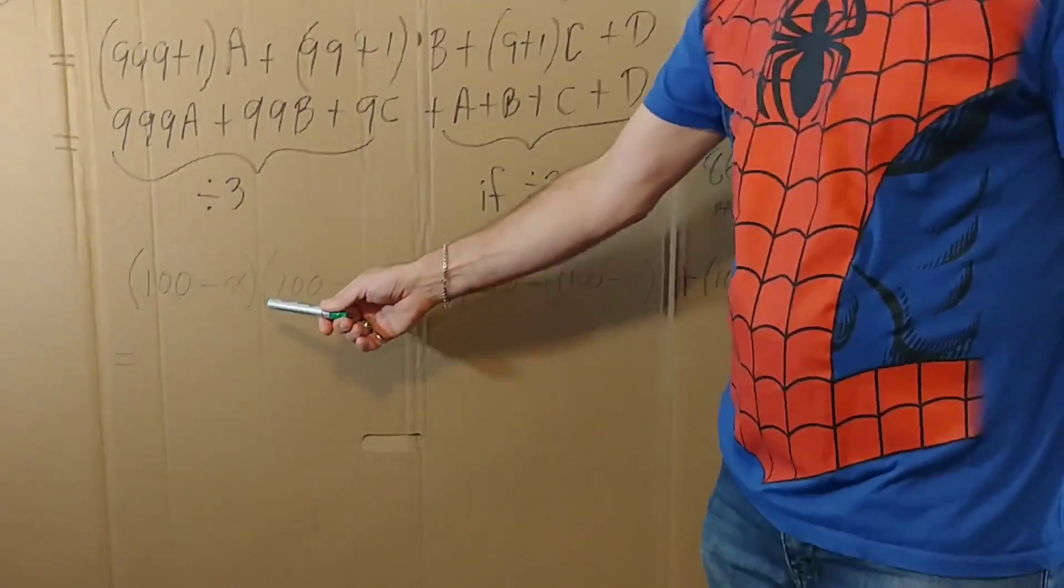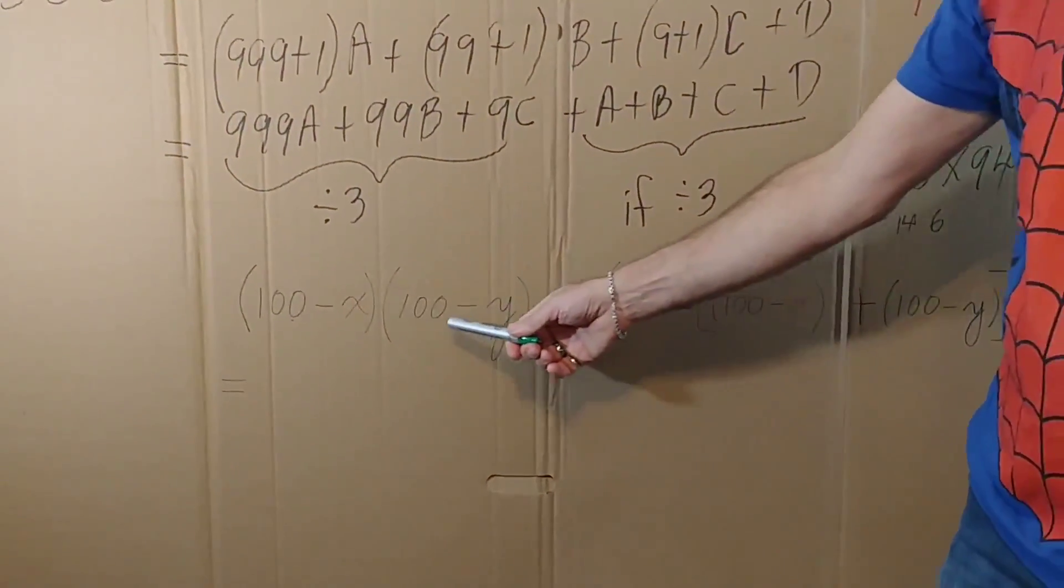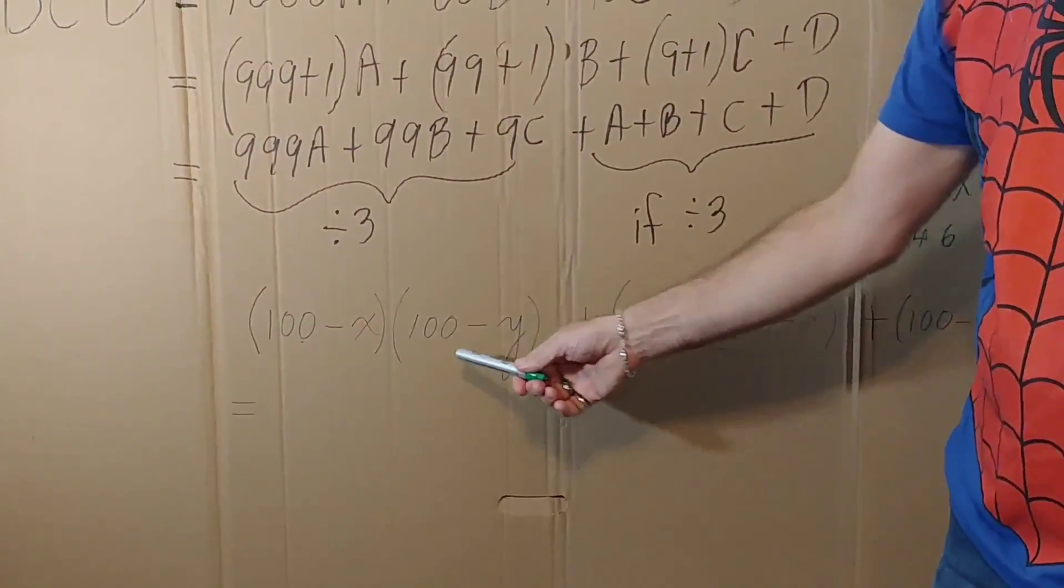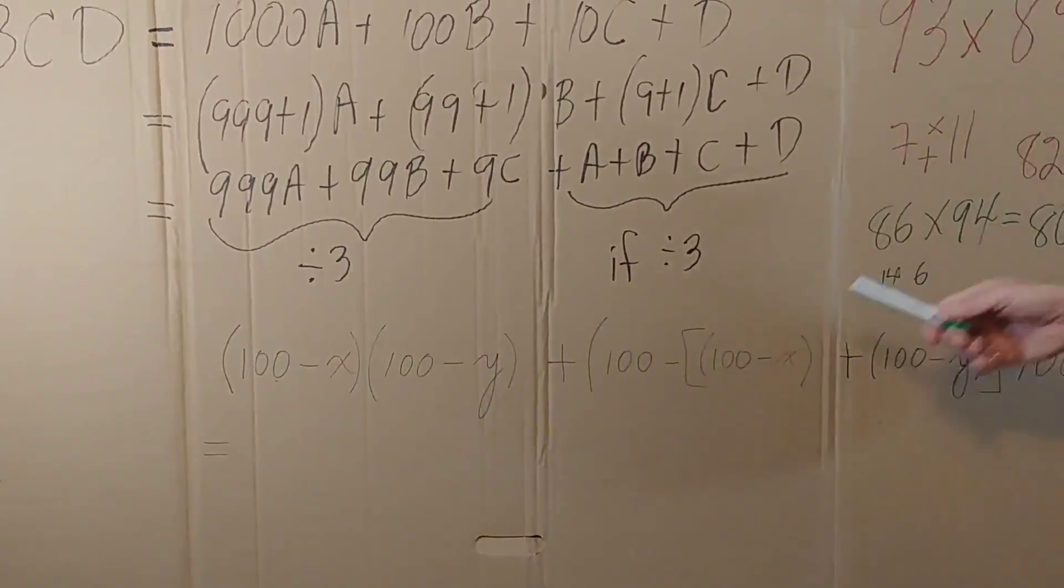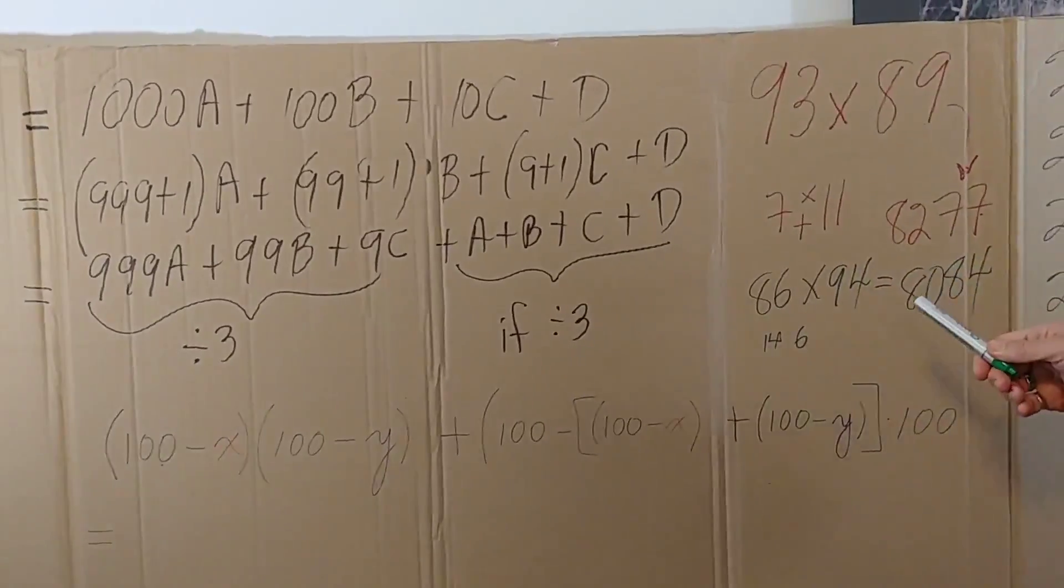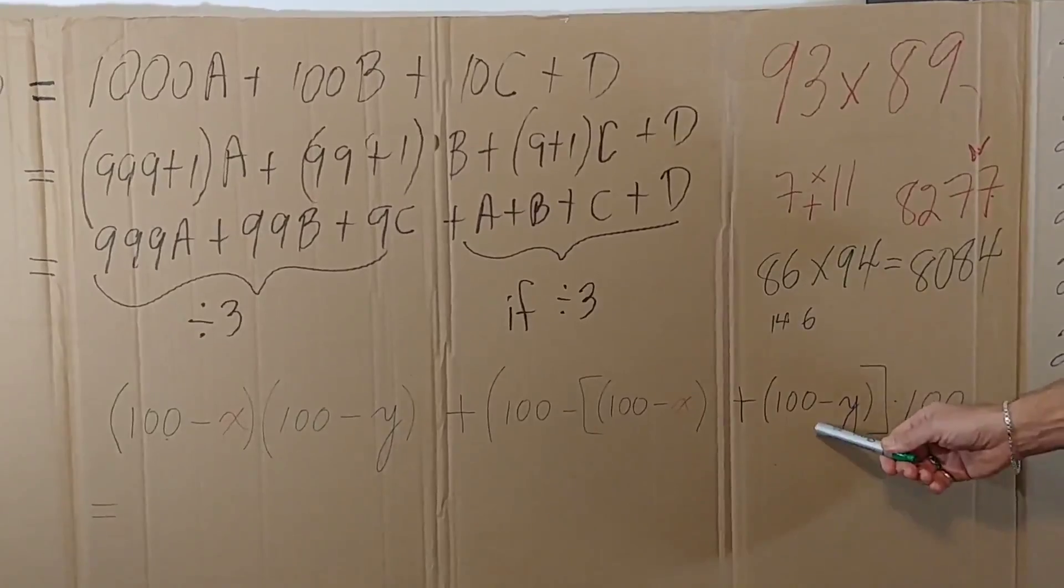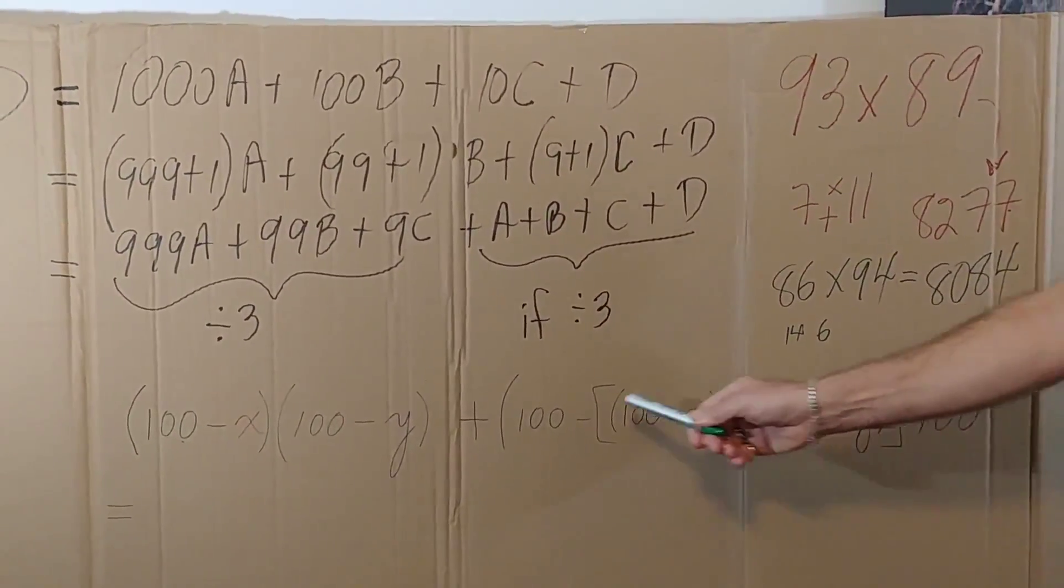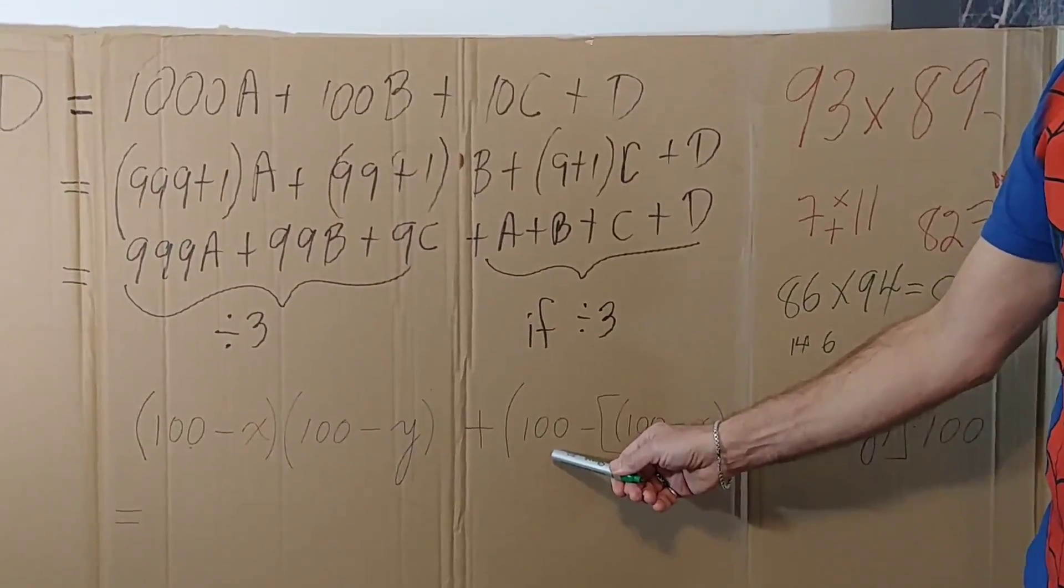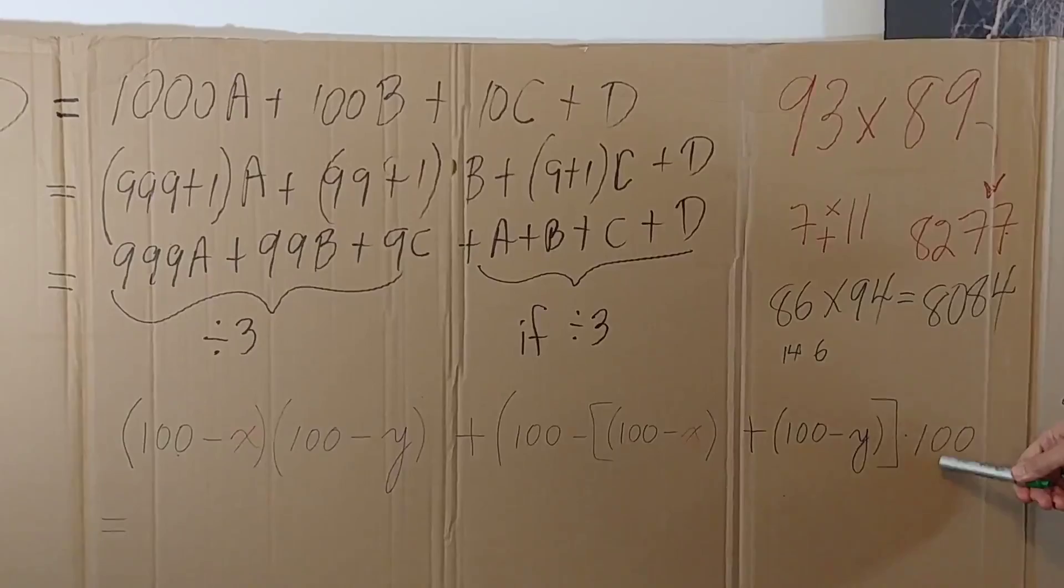subtracted it from 100, took the second number, subtracted it from 100, that was y, and then I multiplied. That gave me the last two digits, such as 77. And then I took those same two differences from 100 and I added them and subtracted it from 100. That gave me the first two digits, but to put them in the right spot, I had to multiply by 100.